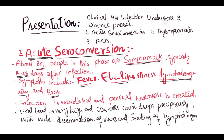Acute seroconversion: About 80% of people in this phase are symptomatic, typically 14 to 28 days after infection. Symptoms may include fever, flu-like illness, lymphadenopathy, and rash. During this phase, infection is established and a pro-viral reservoir is created. Viral load is typically very high and the CD4 cell count drops precipitously, with wide dissemination of the virus and seeding of lymphoid organs.